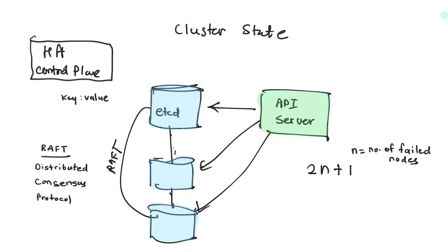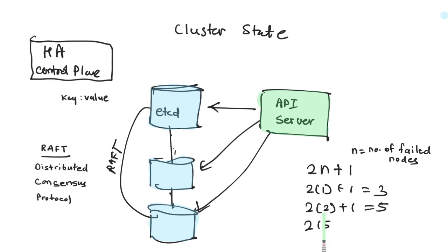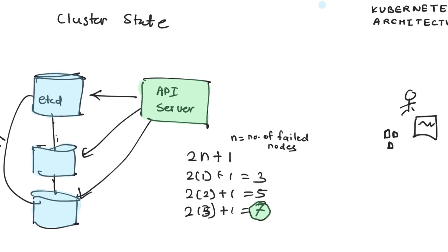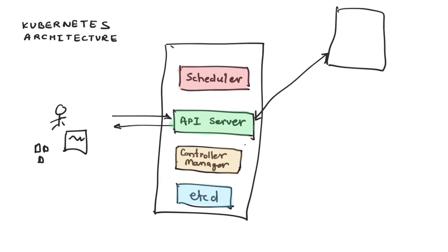The fault tolerance formula for etcd is 2n+1. To tolerate one node failure you need three nodes; to tolerate two node failures you need five; to tolerate three node failures you need seven. Typically you create a maximum of seven etcd nodes, because beyond that the cluster becomes slower due to the volume of data traveling between etcd nodes for every commit or update. etcd is the most important component for high availability.